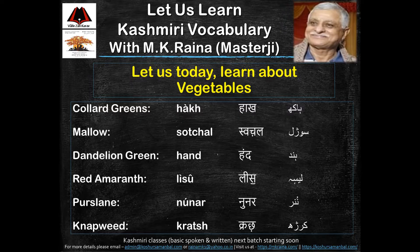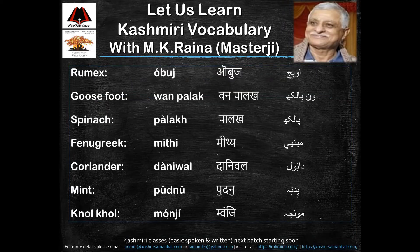Collard greens, mellow, dandelion green, red amaranth, porcelain, napweed, rumex, goosefoot, sipnach, fallak, fenugreek.